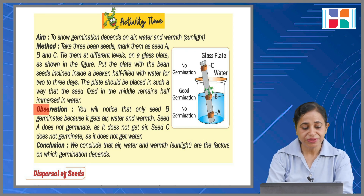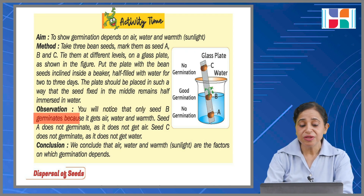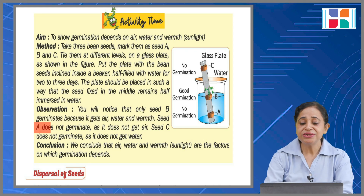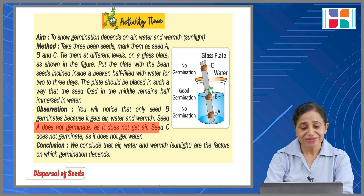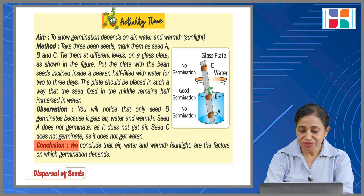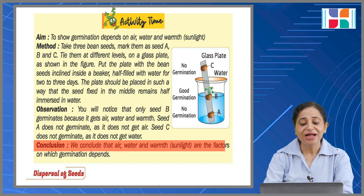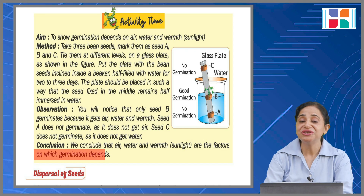Observation: you will notice that only seed B germinates because it gets air, water, and warmth. Seed A does not germinate as it does not get air. Seed C does not germinate as it does not get water. Conclusion: we conclude that air, water, and warmth are the factors on which germination depends.